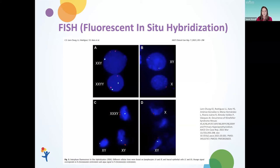The FISH test is also able to look at hundreds of cells under the microscope, whereas a karyotype may only look at 20 or 30 cells. We can look at 200 to 500 cells using FISH technology, which can really help hone in on the percentage of mosaicism in different cell types, just by the count of the probes lighting up under the microscope.